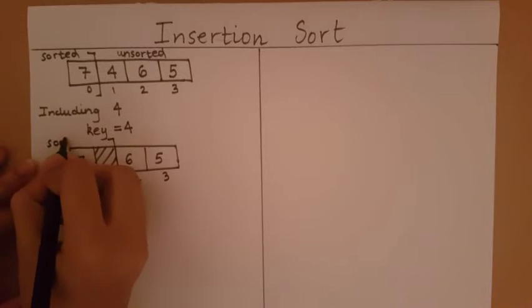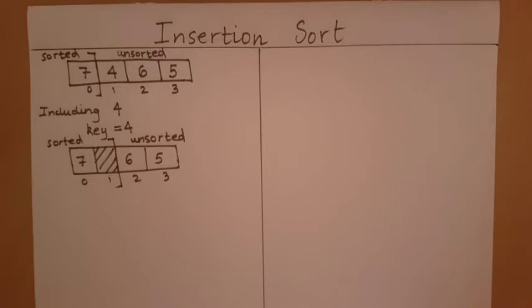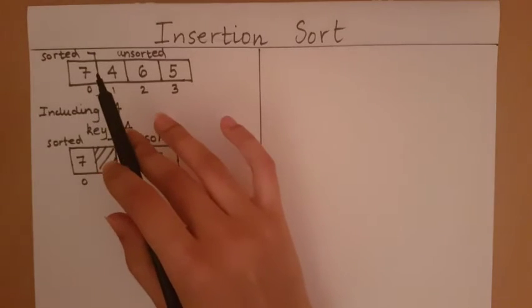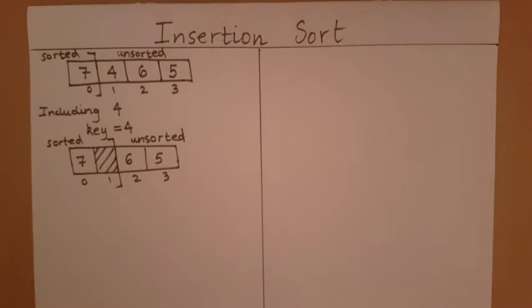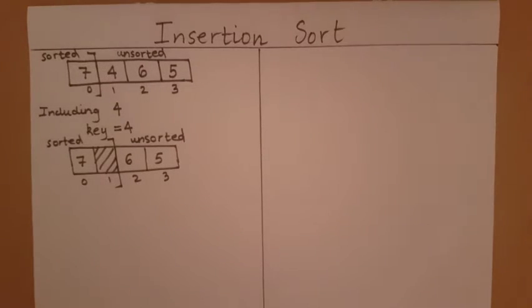We've expanded the sorted array size from one element to two elements. It has all the elements previously in the sorted array plus one extra space to accommodate the element we're going to add. I have a space in which I want to include four. The task is to place the space at the correct index where four must go.